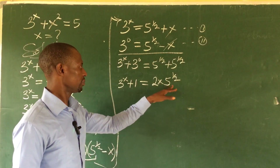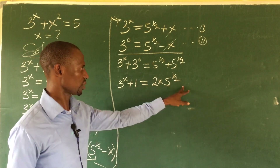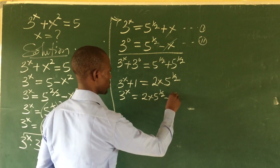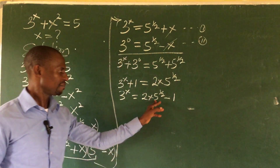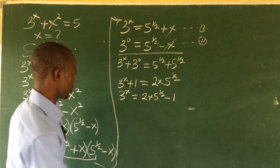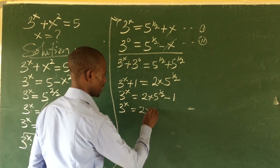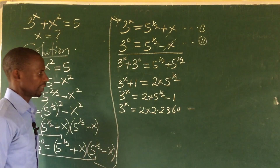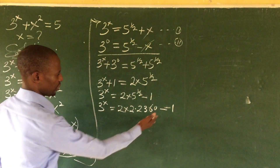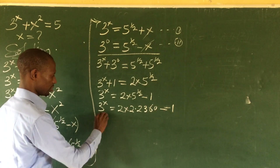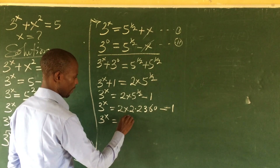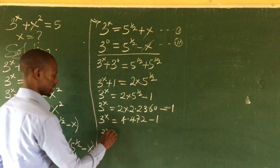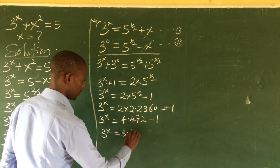We can now find the square root of 5 and move the 1 to the other side. So we have 3^x = 2 · 5^(1/2) - 1. The value of 5^(1/2) is approximately 2.236, so 3^x = 2 × 2.236 - 1 = 4.472 - 1 = 3.472.